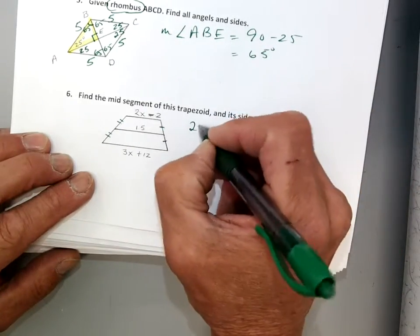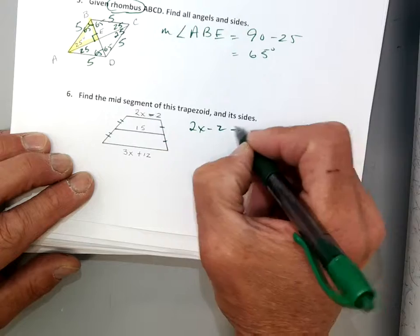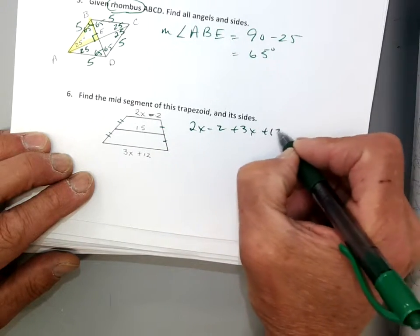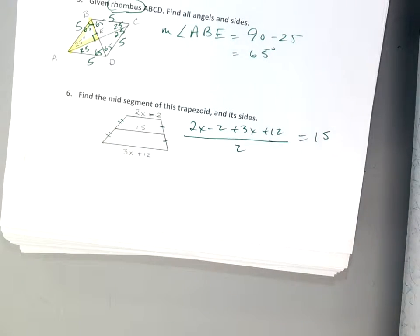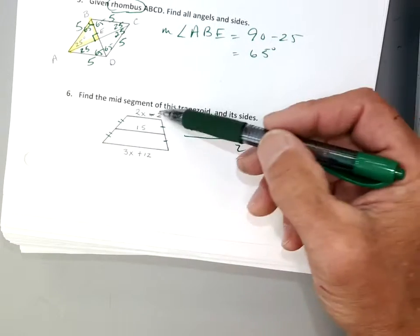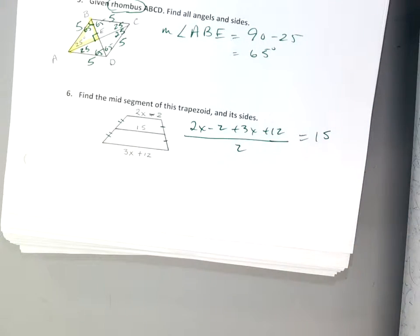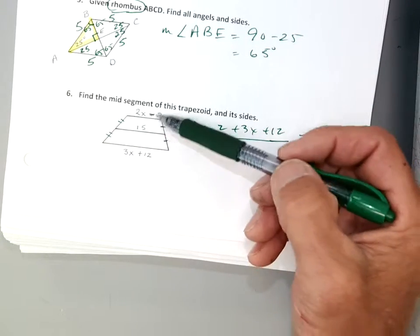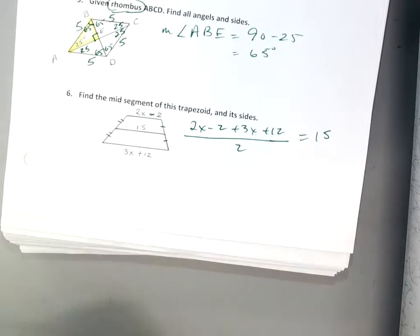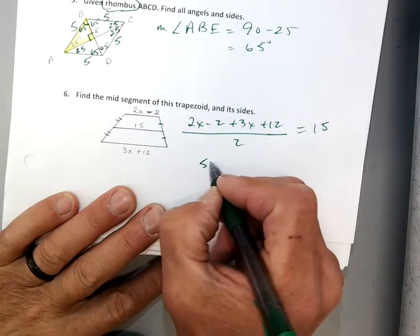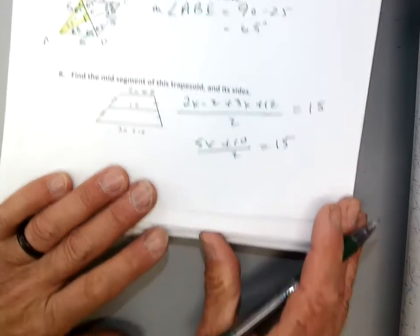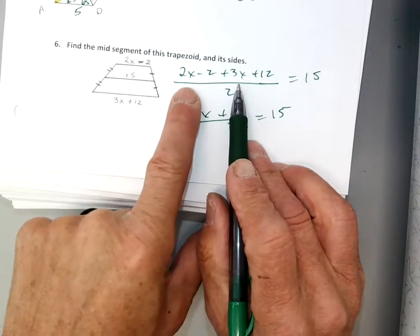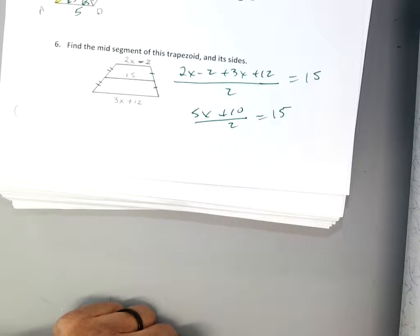Yes. So the top is 2x minus 2 plus the bottom, 3x plus 12, all divided by 2 equals the middle. Or in math language, base 1 plus base 2 divided by 2 equals the mid-segment. So it's just the basis, the average of the base is equal to the mid-segment. So, all right, let's simplify. That's going to be a 5x plus 10 divided by 2 equals 15, okay?